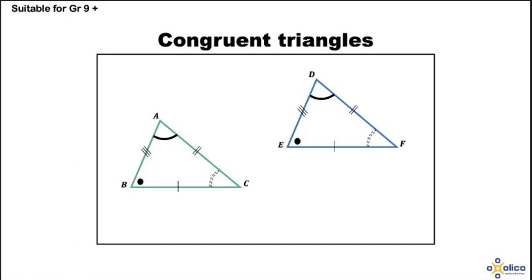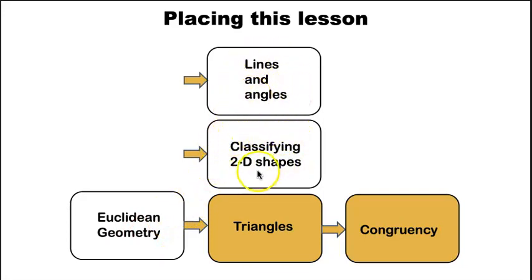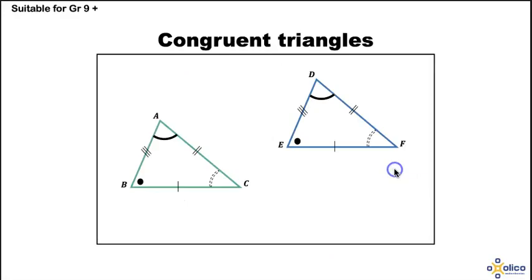Let's introduce congruent triangles. Congruency in triangles is a section of mathematics that falls into Euclidean geometry. We've already learnt about lines and angles and other shapes like quadrilaterals. We are now going to look at triangles and in particular what makes them congruent.